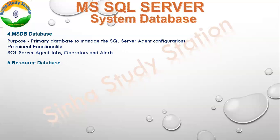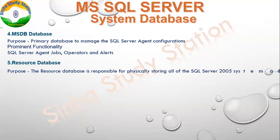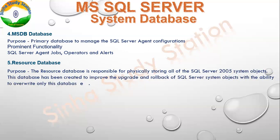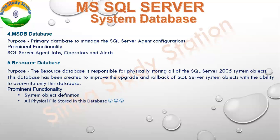There is also our hidden database, which is the Resource database. When we studied MS SQL Server system databases, we saw the Master database contains logical files. Before 2005, the Master database also stored physical files, but after 2005, all physical files are stored in the Resource database. The master database and resource database can be considered as one. When we upgrade, rollback, or override system objects and abilities, this database is used. All the objects and definitions are stored in this database.